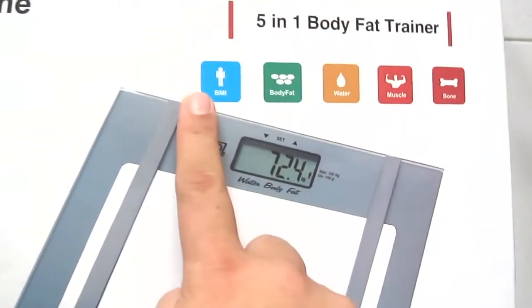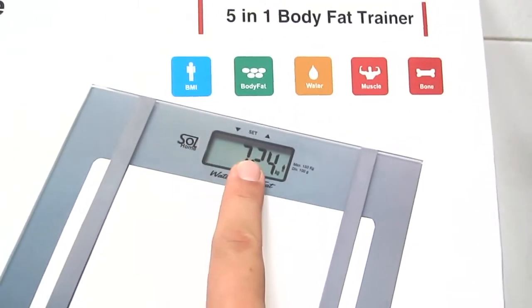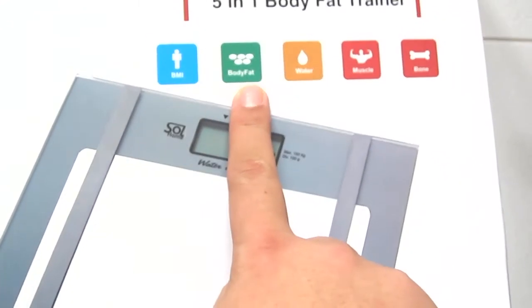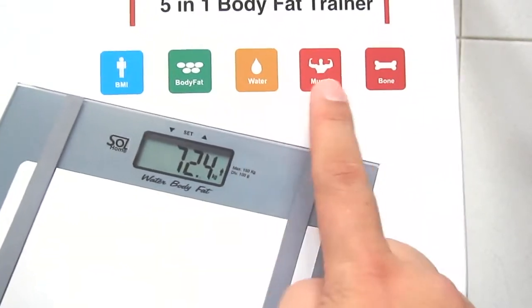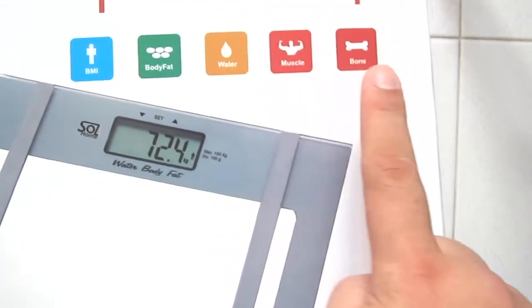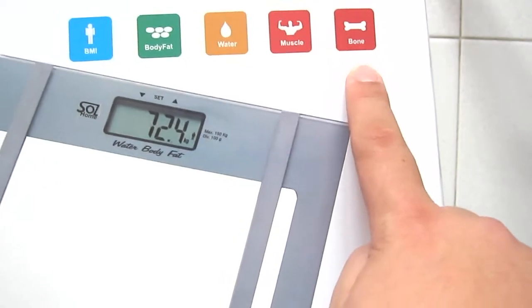The box says it'll give me BMI, which you calculate from the weight. You can get the body fat percentage, the water percentage, the hydration percentage, the muscle percentage in the body, and the bone mass, in terms of percentage as well.